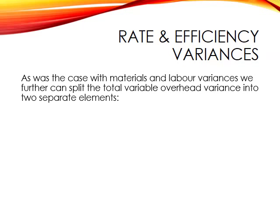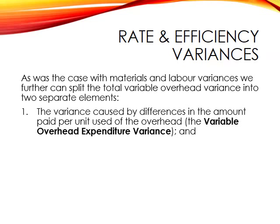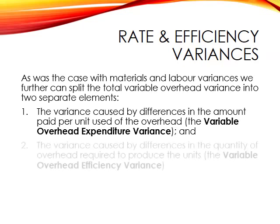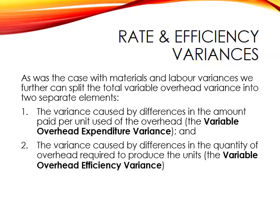With materials and labour variances, we were able to split the total variance into two separate elements, and we can do the exact same thing with our total variable overhead variance. We can split it into the variance caused by differences in the amount we pay per unit of overhead — the variable overhead expenditure variance — and the variance caused by differences in the quantity of overhead required to produce our units — the variable overhead efficiency variance.